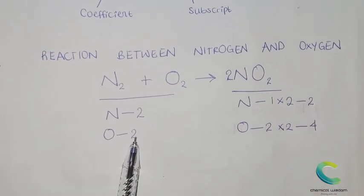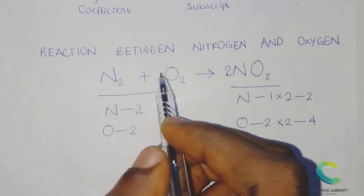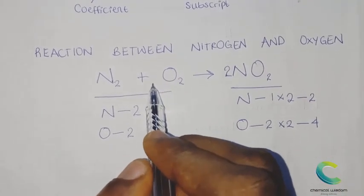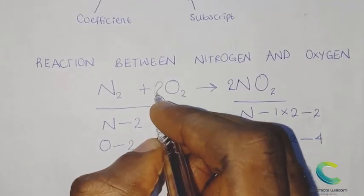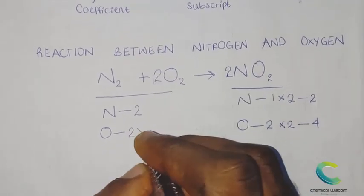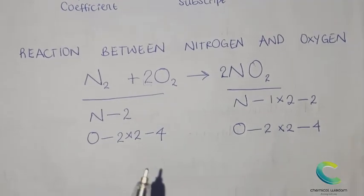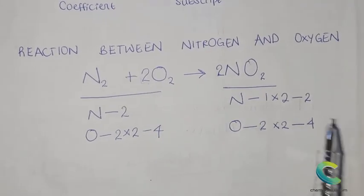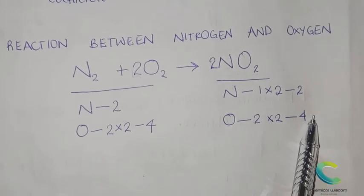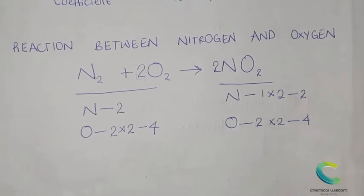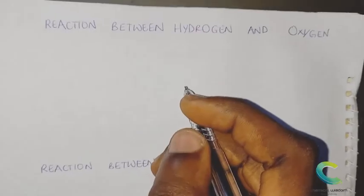The equation is still not balanced — we have four oxygen atoms on the right and two on the left. To balance the oxygen, introduce a coefficient of two in front of O₂: two times two gives four. Now the equation is balanced — two nitrogen on the left equals two on the right, and four oxygen on the left equals four on the right. The first equation is balanced.